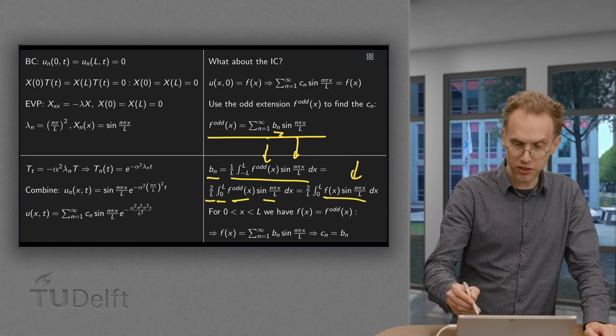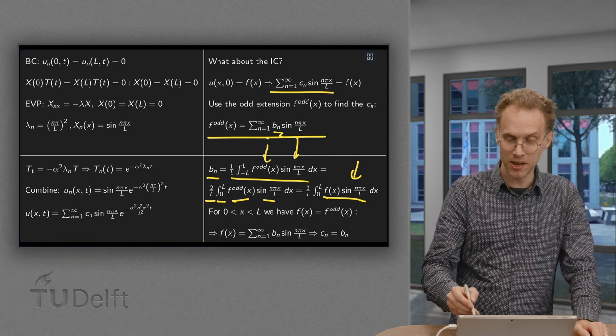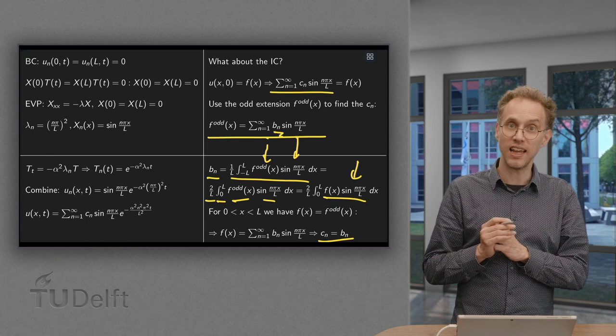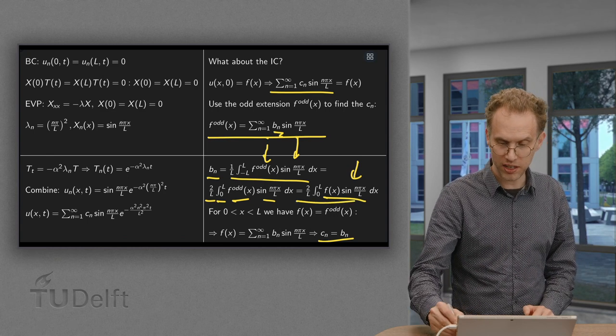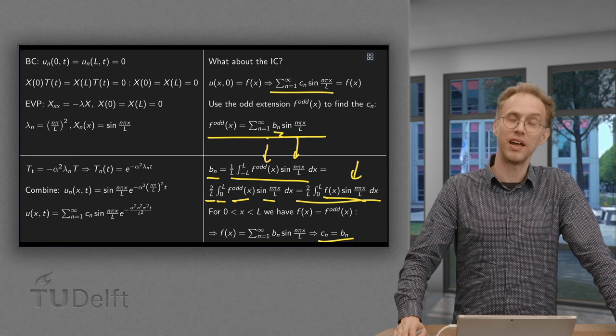So in order to find this coefficient for f of X, the CN, we see that we can use exactly the same. The CN are the b n. So the CN which you need in your solution are the b n given by this integral where you only need f of X. So that is how you take care of your initial condition.